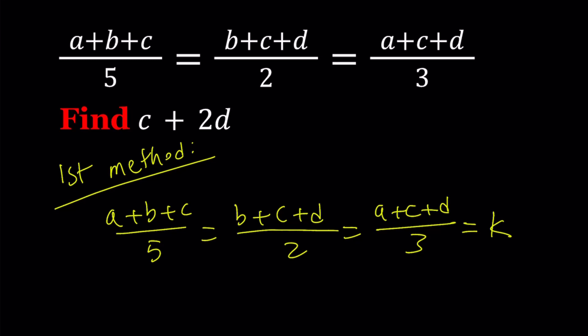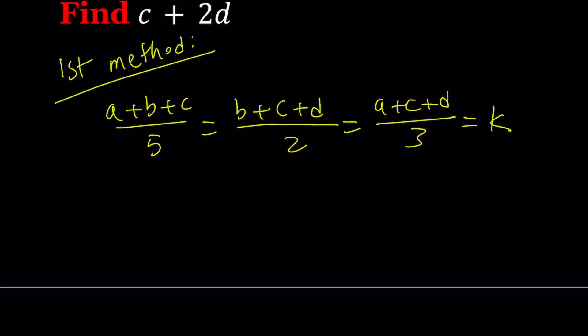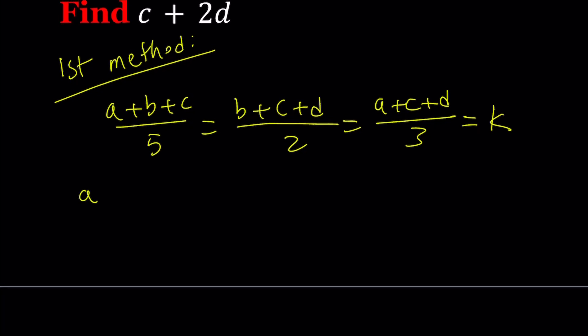From here we're going to get three equations. Let's go ahead and cross multiply each one. We get a plus b plus c equals 5k, then b plus c plus d equals 2k, and a plus c plus d equals 3k.